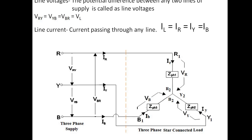The concept of line voltages: the potential difference between any 2 lines of supply is called line voltage. In a 3-phase supply with lines R, Y, and B, the voltage between R and Y is V_RY, between Y and B is V_YB, and between B and R is V_BR. These are the line voltages. Since the system is balanced, all these voltages are equal. Line current is the current passing through any line — so IR flows through the R line, IY through the Y line, and IB through the B line.